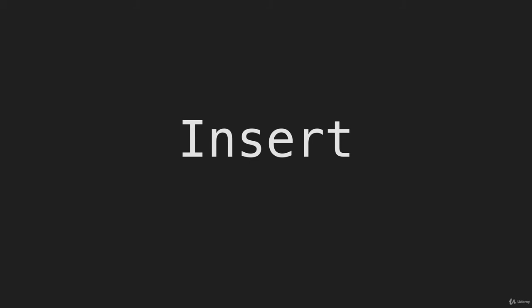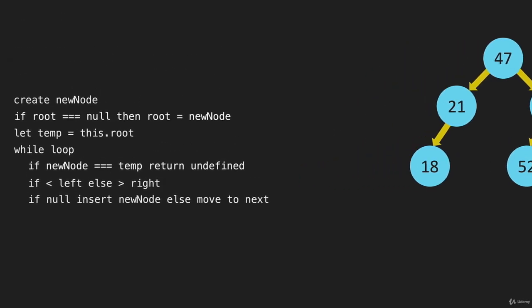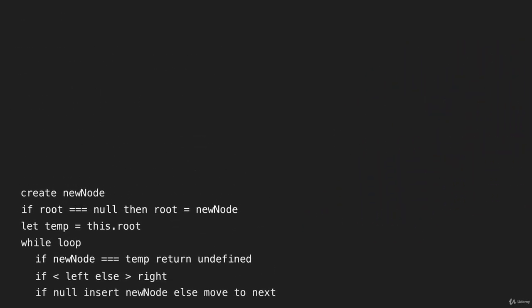We're going to code our insert method, picking up right where we left off in the last video. We'll take the notes and move them to the bottom and put the code at the top. We're going to start out with insert and pass it a value, then we'll start working through our list.